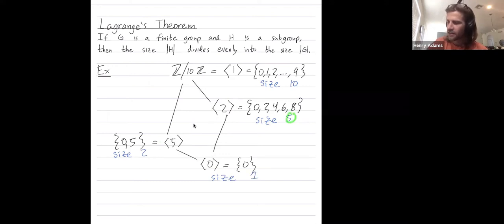And indeed, this number 5 divides 10, right? So the size of the subgroup divides the size of the group. And this number 2 divides 10. The size of the subgroup divides the group. So why don't I do one more example?